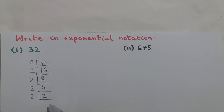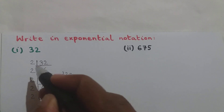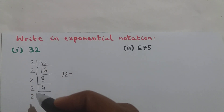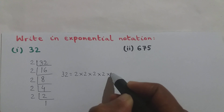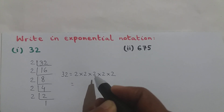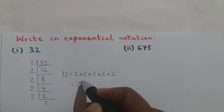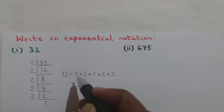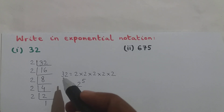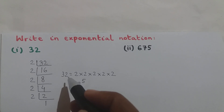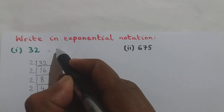It has become 1, so we stop the process here. So 32 is equal to 2 × 2 × 2 × 2 × 2 — that is 2 multiplied by itself 5 times — and I can write that as 2 raised to the power of 5. So 32 written in its exponential form is 2 raised to the power of 5.